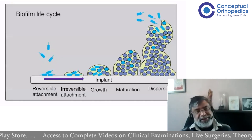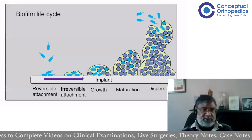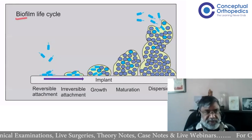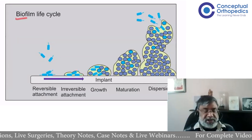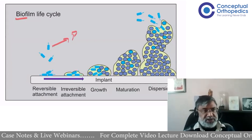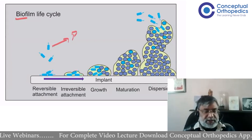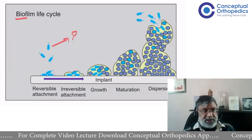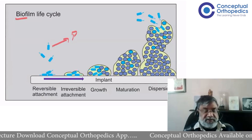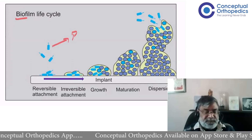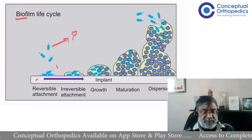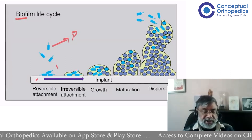Why is periprosthetic joint infection so difficult to diagnose and treat? We need to understand the concept of biofilm. Normally, if there is no implant and you get an infection in a joint, the bacteria are in a free-floating form called planktonic bacteria. These can be easily attacked by antibiotics, antibodies, and macrophages. But the problem with periprosthetic infection is that as soon as you put an implant in, the bacteria start forming colonies — they start adhering to the implant in the first steps.